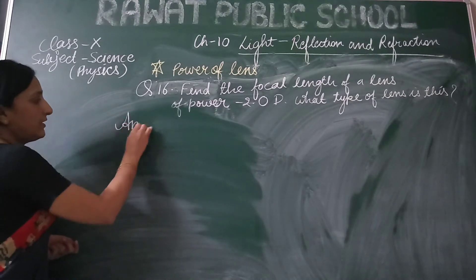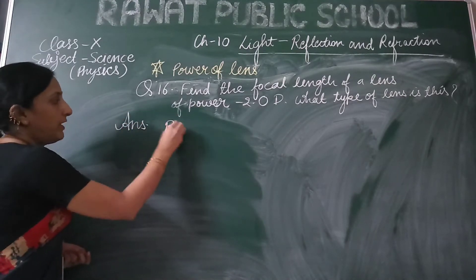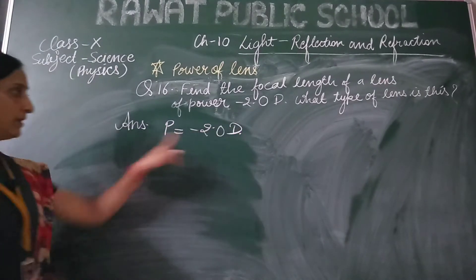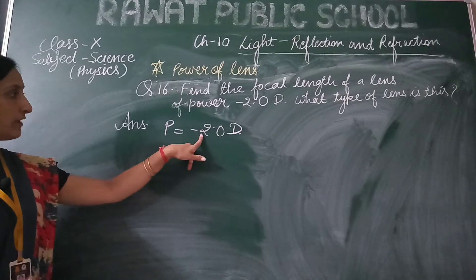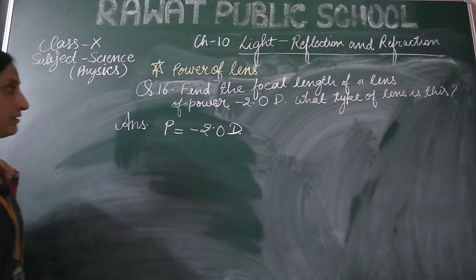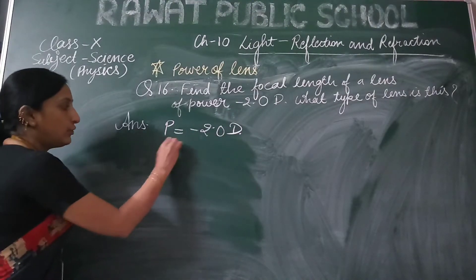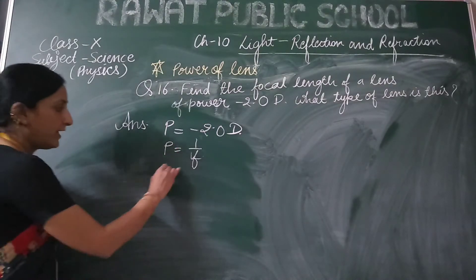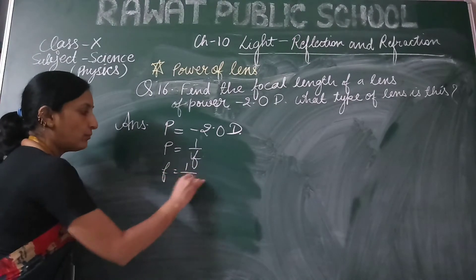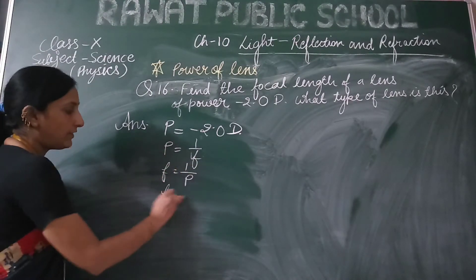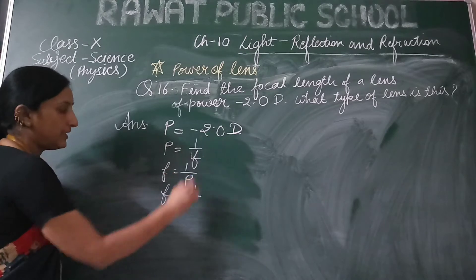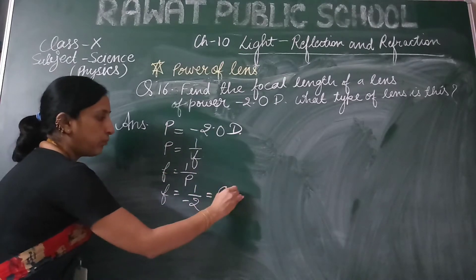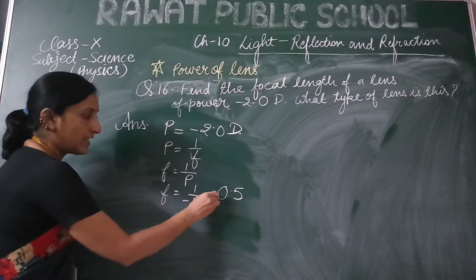What is given? The power is minus 2 diopter. We have to find out the focal length. As we know that P is equal to 1 upon F, so F is equal to 1 upon P. F is equal to 1 upon minus 2, that is minus 0.5.